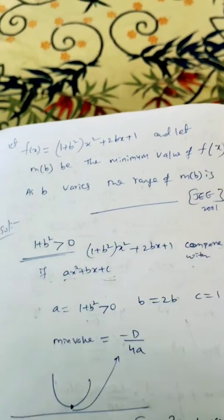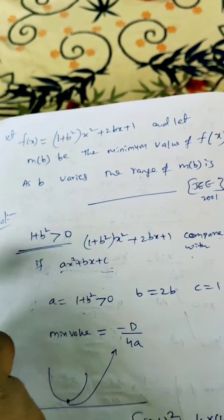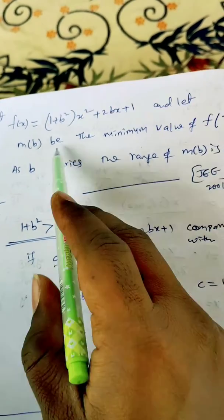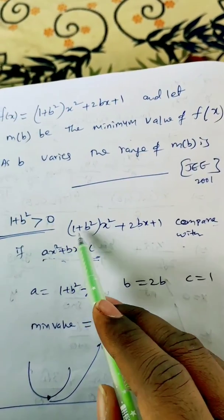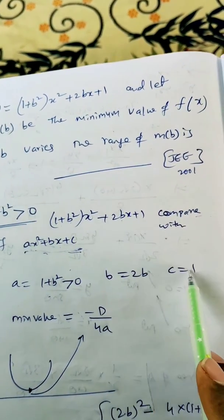Let us compare this with a quadratic equation. Here ax² + bx + c is a quadratic equation. If you compare this given equation, a = 1+b², b = 2b, c = 1.